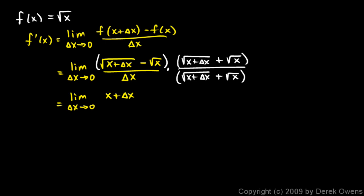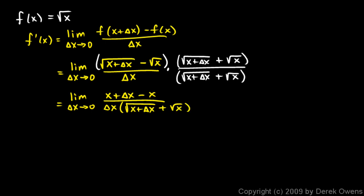The FOIL is first, outer, inner, and last. The outer and inner just canceled out, so now we multiply the last: negative square root of x times square root of x is just negative x. So that simplified very nicely. Down on the bottom we still have delta x times all of this — the square root of x plus delta x plus the square root of x. Up top, the x and the minus x cancel out, and we're left with delta x all by itself, which cancels the delta x on the bottom. So we have the limit as delta x approaches zero of one over the square root of x plus delta x plus the square root of x.